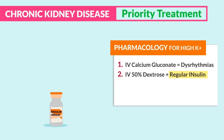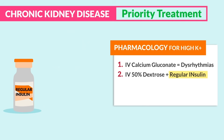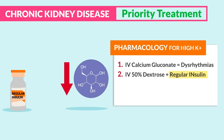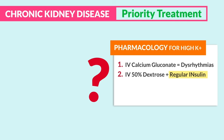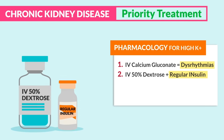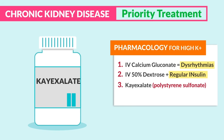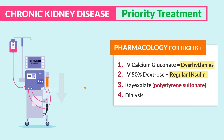If dysrhythmias are not mentioned in the question, move to number two: IV 50% dextrose and regular insulin. Insulin puts sugar and potassium into the cell out of the blood, lowering serum potassium — the most effective way to lower blood potassium quickly. Dextrose is given alongside to prevent hypoglycemia. Options three and four — K-exalate (sodium polystyrene sulfonate) and dialysis — are used last since they take longer to lower potassium.